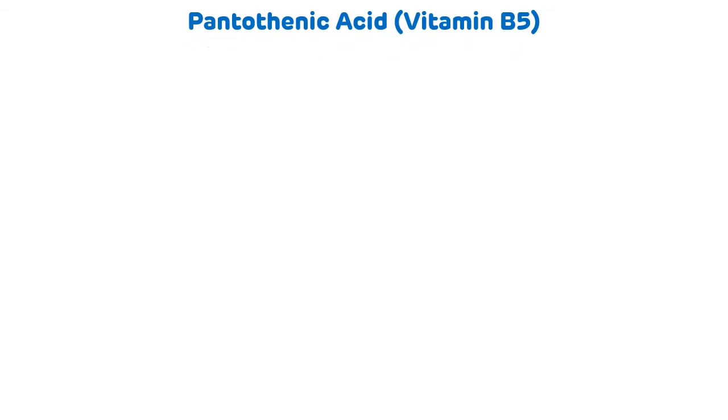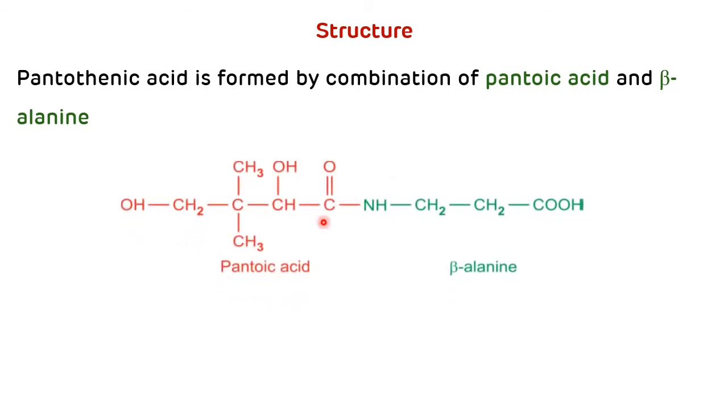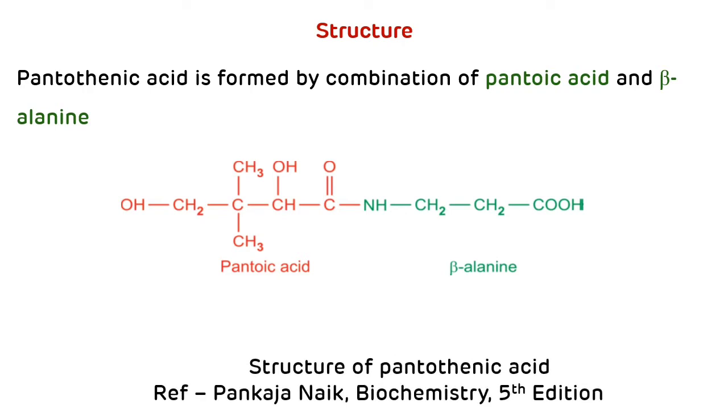The name pantothenic acid is derived from the Greek word pantothen, which means everywhere, and it gives an indication of the wide distribution of vitamin B5 in foods. Structure of pantothenic acid: pantothenic acid is formed by a combination of pantoic acid and beta-alanine.